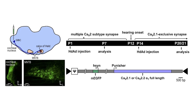Our experimental system is the Calyx of Held, a large presynaptic terminal in the auditory brain stem, which transitions during development from a mixed CAV2 subtype presynaptic terminal in an immature state to a CAV2.1 exclusive terminal at maturity. Similar to the Calyx of Held, GABAergic, cerebellar, thalamic, and hippocampal presynapses transition from mixed CAV2 subtypes to CAV2.1 exclusivity during neuronal circuit maturation.